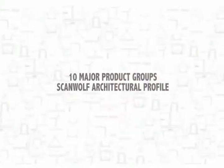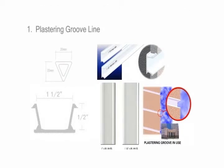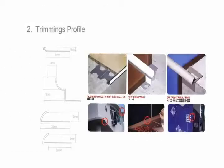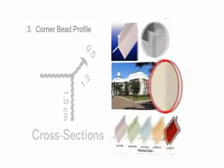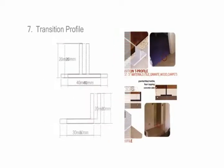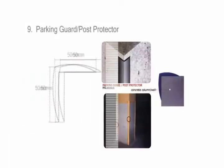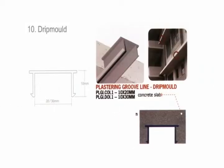The various architectural profiles can be categorized into 10 major groups: Plastering Groove Line, Trimmings Profile, Corner Bead Profile, Chamfer Edge Profile, Door Window Jam Profile, Stair Nosing Profile, Transition Profile, Movement Joint, Parking Guard Post Protector, and Drip Mode.